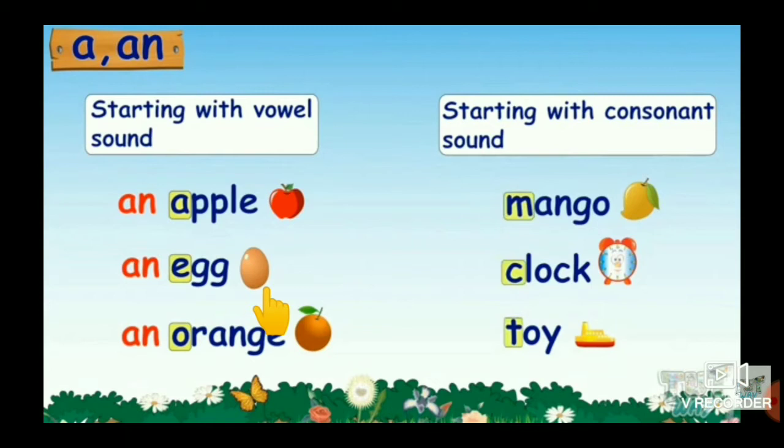Children, see the rule is when a singular naming word begins with a sound, any of the vowels, we use AN before the word. For example, an apple, an egg, an orange. See here, starting letter vowels, A, E, O. That's why we use these words before AN. Understood?